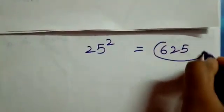Let's do them with an example. 25 square equal to 625. Let's see how to arrive here.